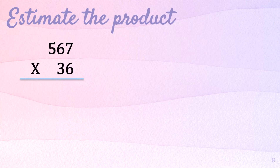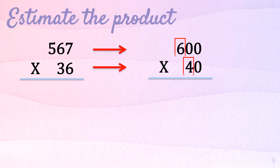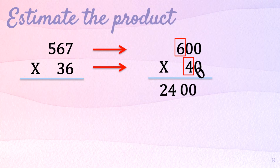Let us try another one: 567 times 36. So round the factors to the greatest place value. 567 will become 600, and 36 will become 40. And then, multiply all the rounded factors, starting with the non-zero numbers. 6 times 4 equals 24. Then count the number of zeros and the final answer is 24,000.